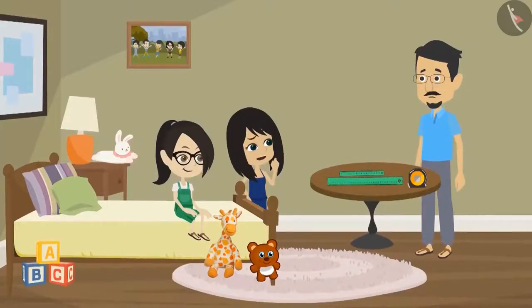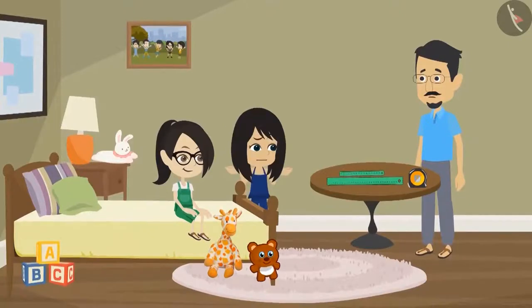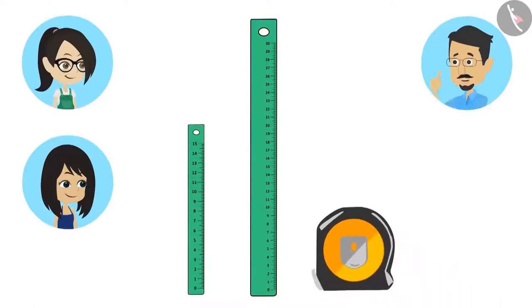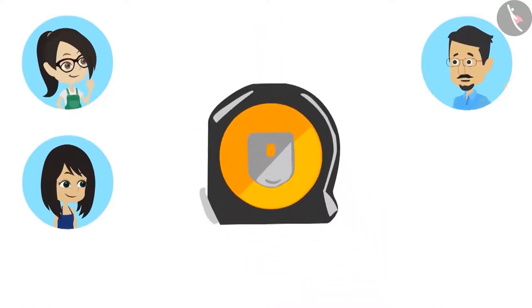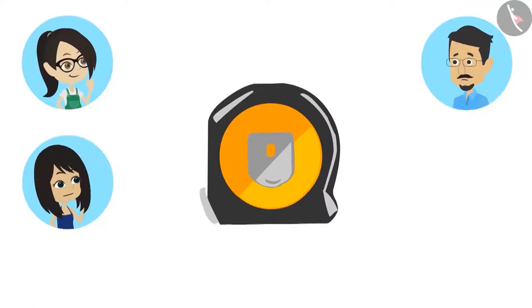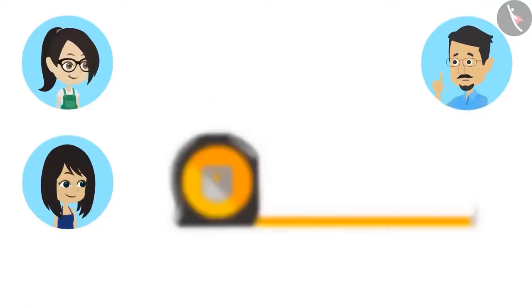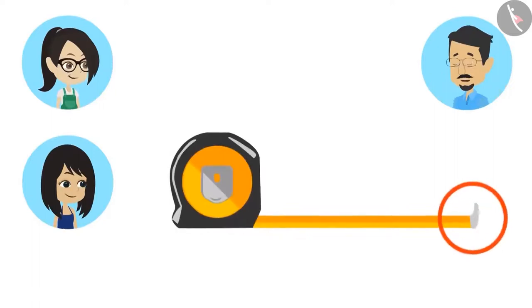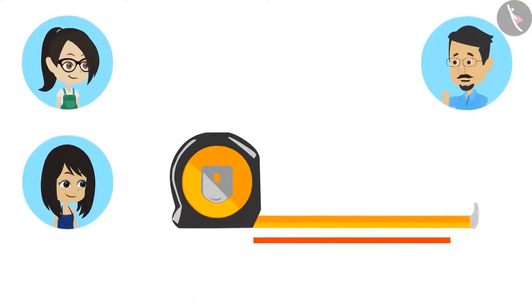But Papa, if we want to measure something longer than 30 centimeters, how will we measure it? For that, we will use this scale. But Uncle, this scale is very small. No, this scale is very long — so long that it can measure your height. Our height? With this scale? How? To use this scale, the handle outside has to be held and pulled. Pulling the handle brings the scale out, and with this scale we can measure height.